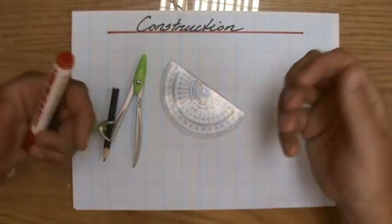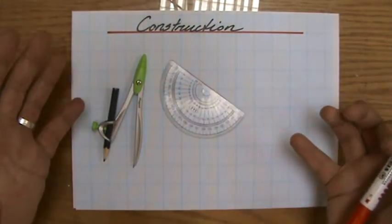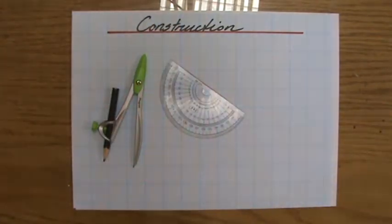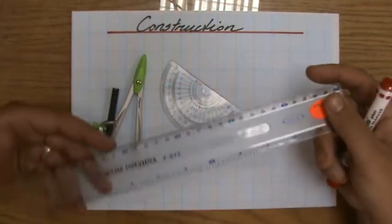Let's continue with some construction using our mathematical tools like a protractor, a compass, and a ruler.